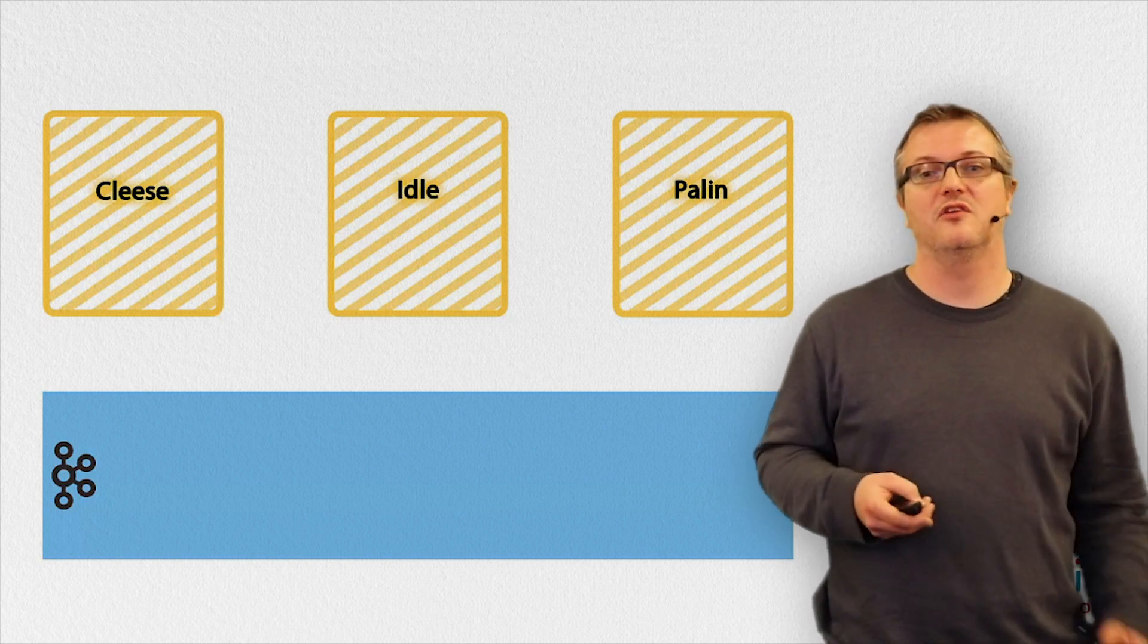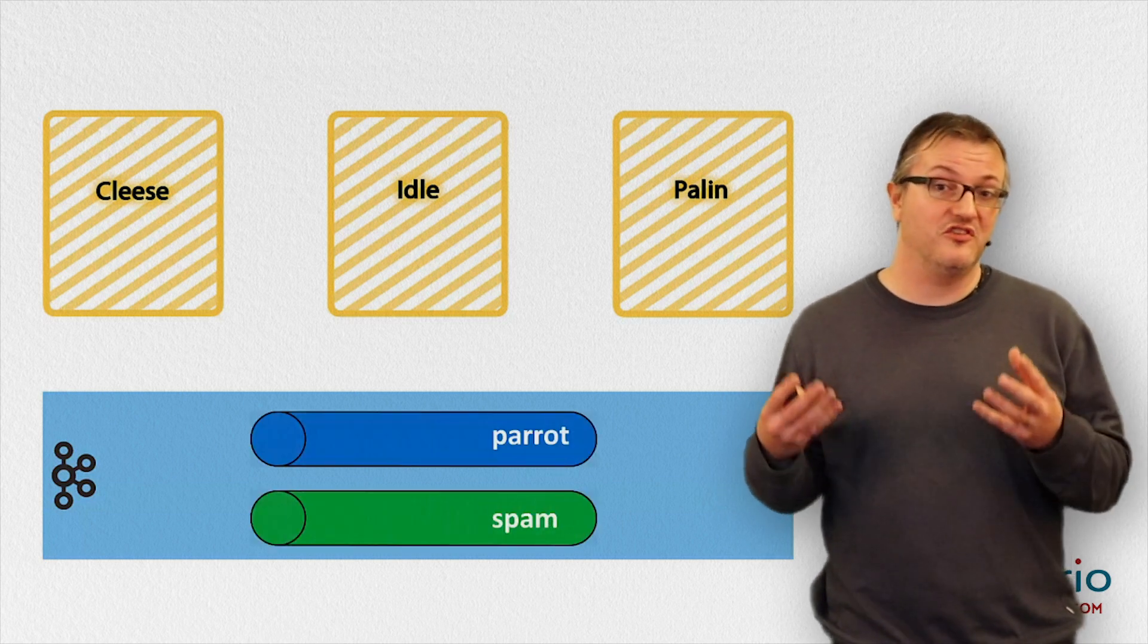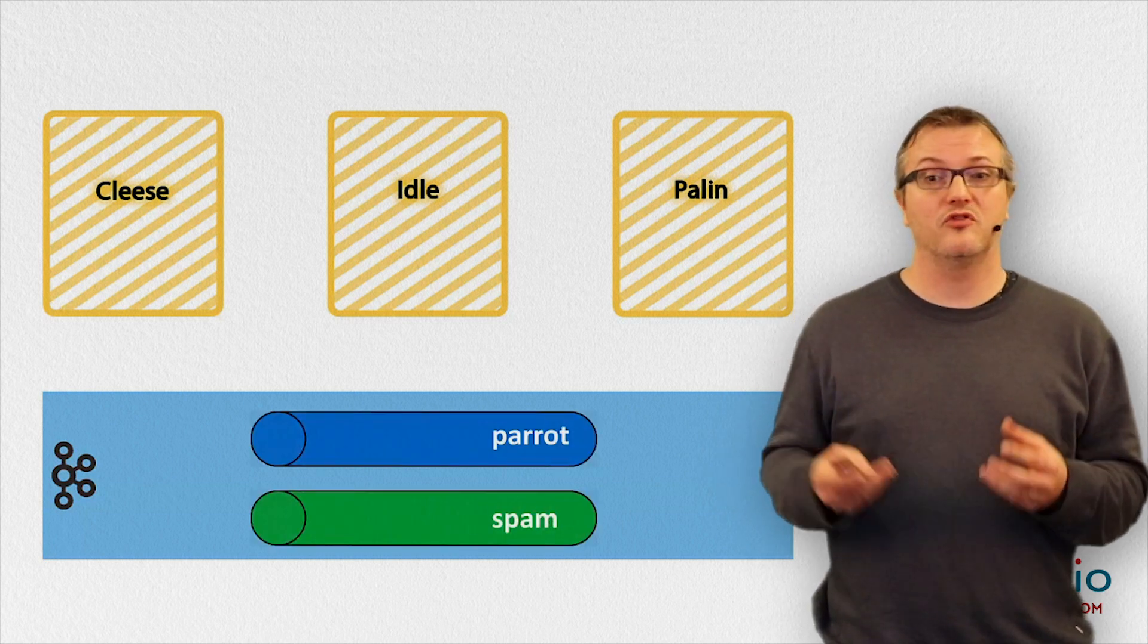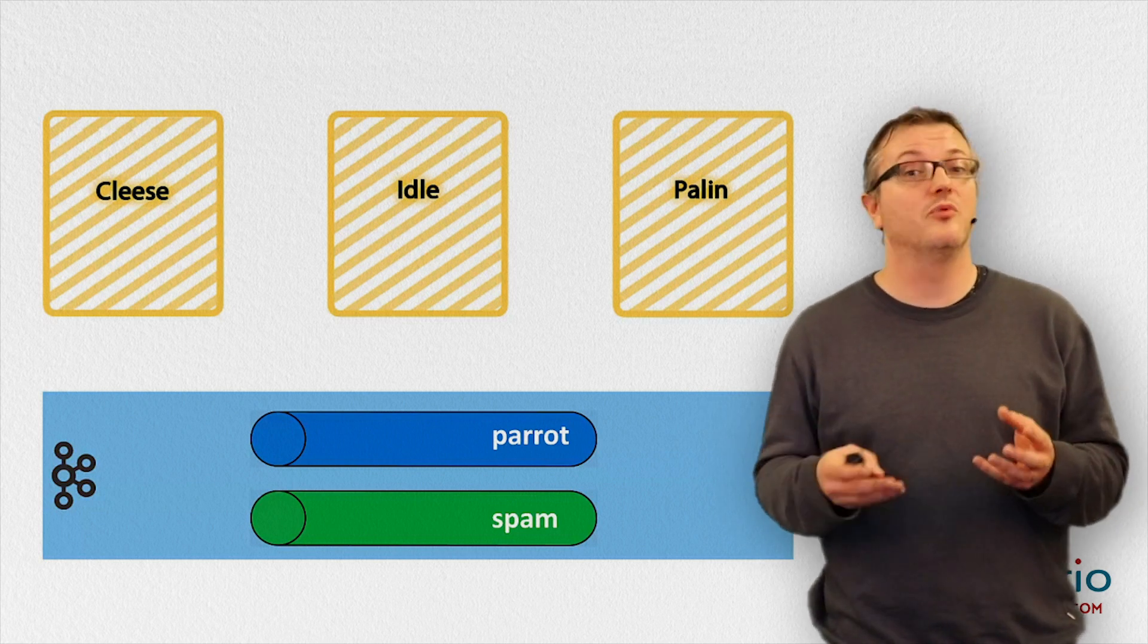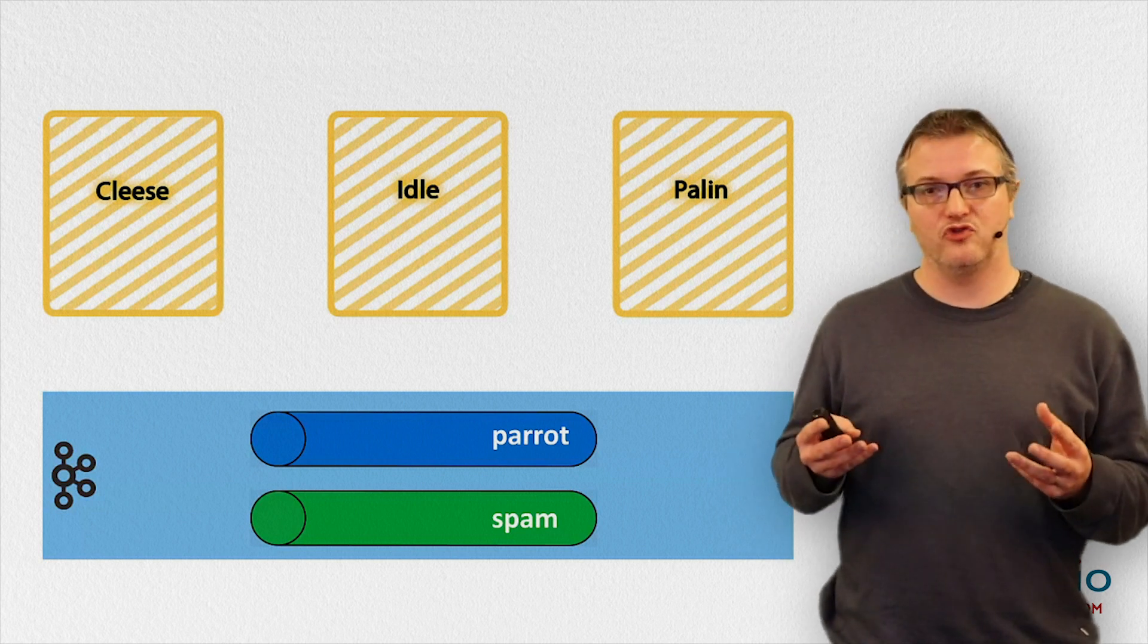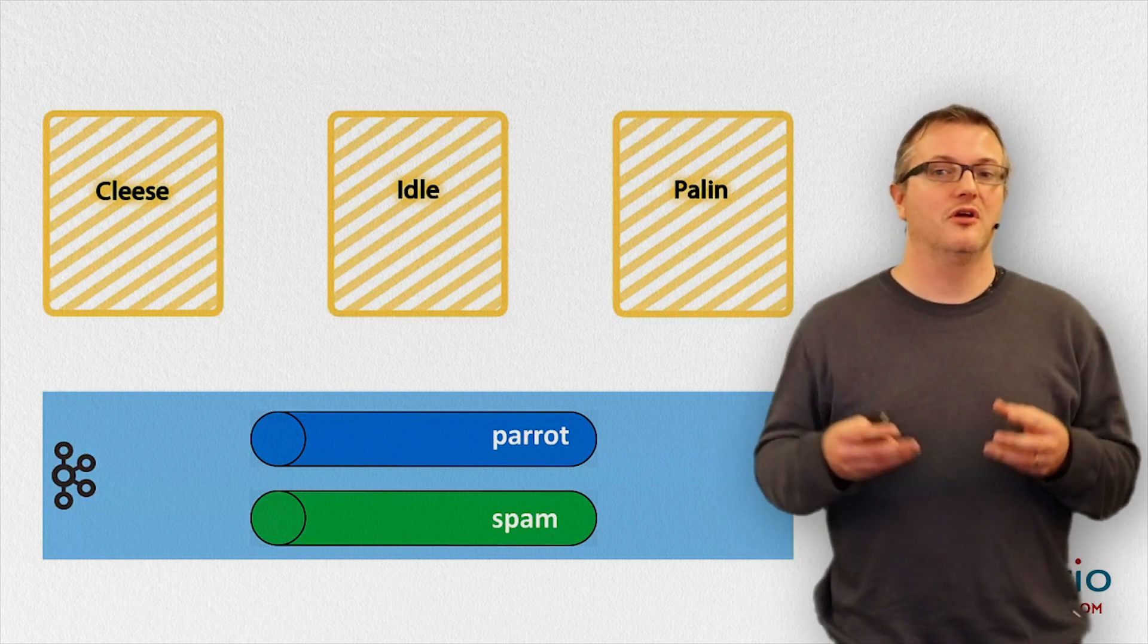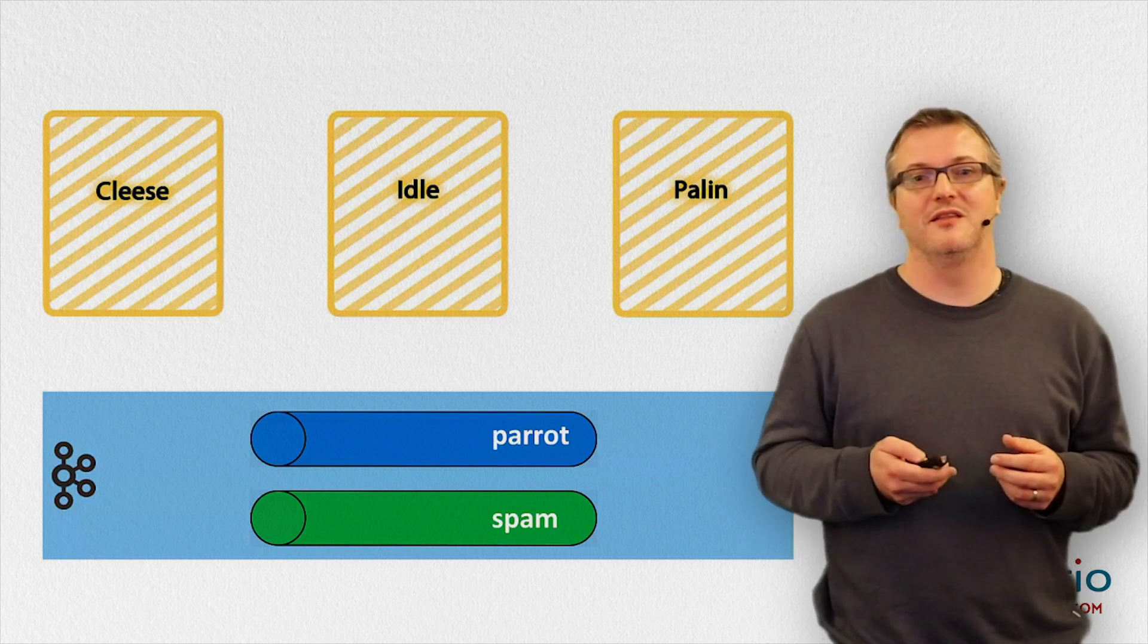And that brings us to the second important conceptual entity in DSH, which is the data itself, of course, which we group in terms of data streams. So in this example, we have three tenants. They are called Cleese, Idle, and Palin. And we have two streams, one with parrot-related data and one with spam-related data.